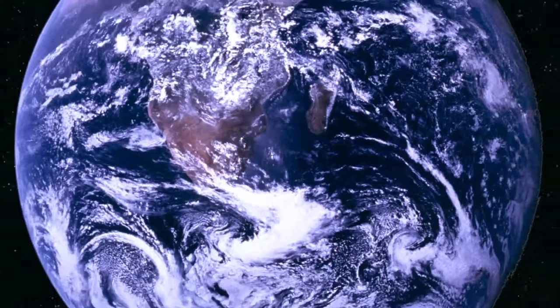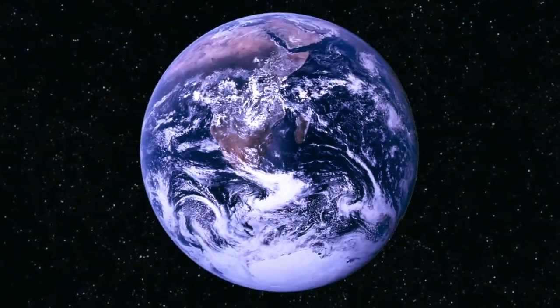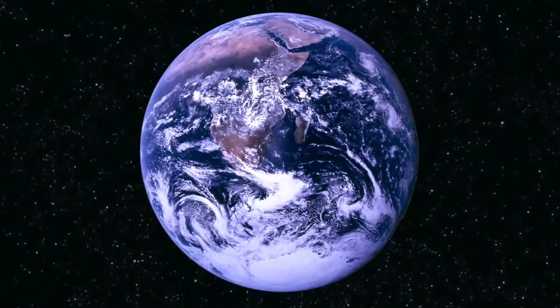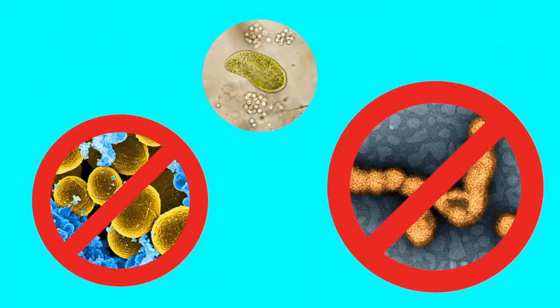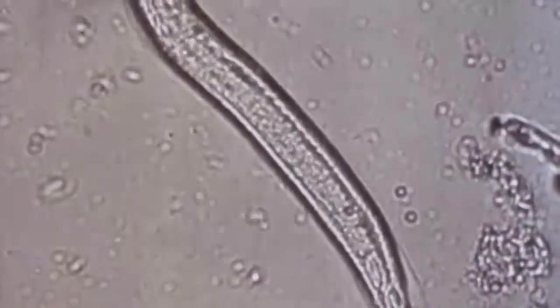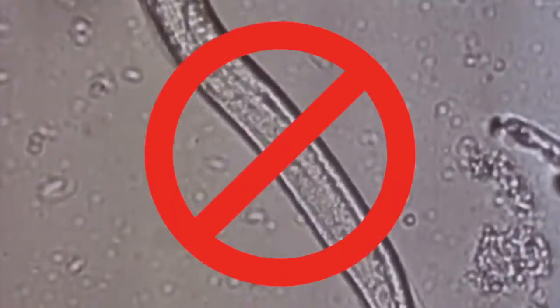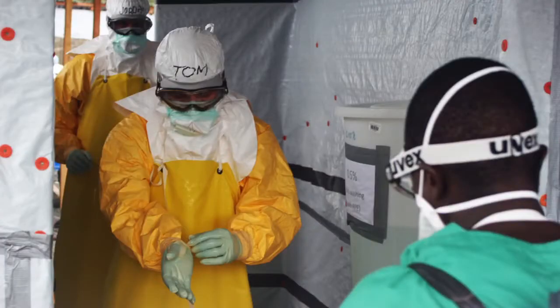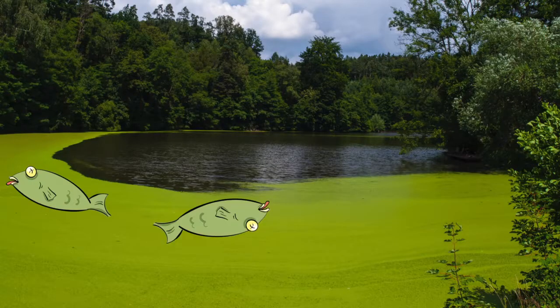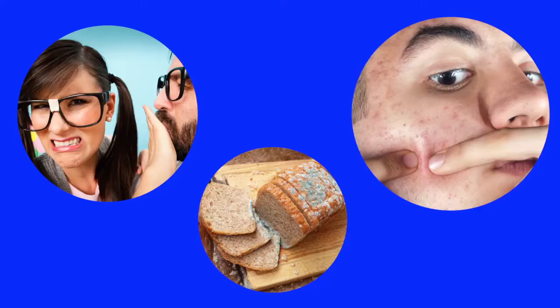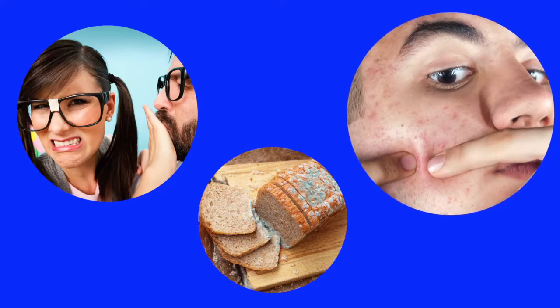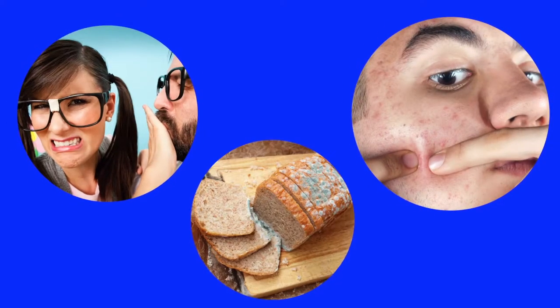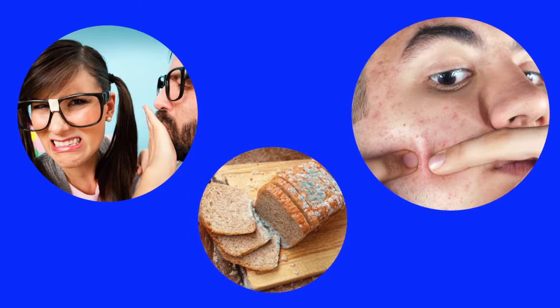What would happen if all of the microbes in the world were to disappear suddenly? No more viruses, bacteria, or protozoa — no more microscopic creatures of any kind. Diseases like strep throat, food poisoning, or Ebola wouldn't exist. We also wouldn't have to worry about algal blooms in lakes and bays that can kill fish. Less deadly problems like acne, bad breath, and moldy food would also be a thing of the past.